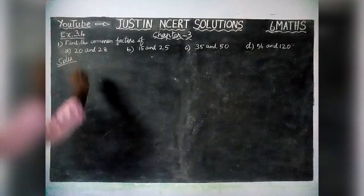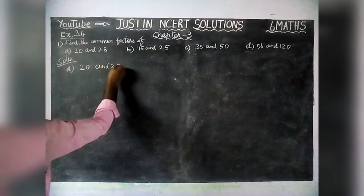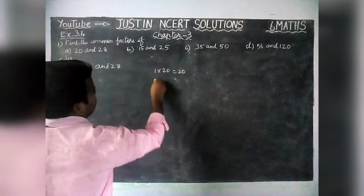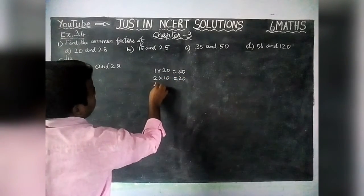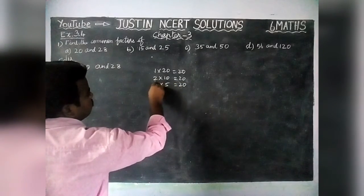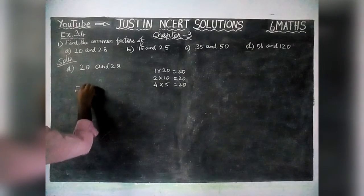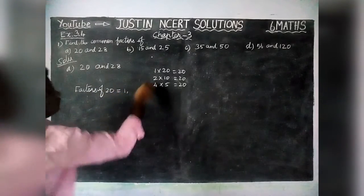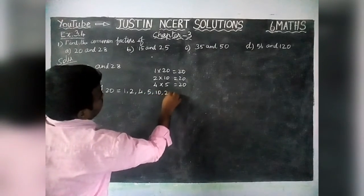First we are going to find Part A: 20 and 28. For that, first we find the factors of 20. 1×20 is 20, 2×10 is 20, 3 will not come, 4×5 is 20, 5×4 is 20, 10×2 is 20, 20×1 is 20. So factors of 20 are equal to 1, 2, 4, 5, 10 and 20.